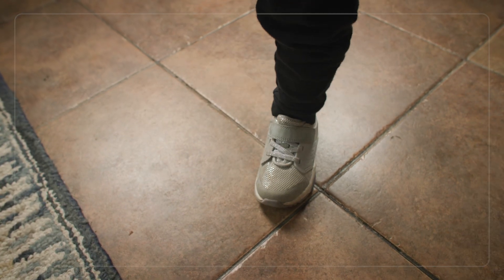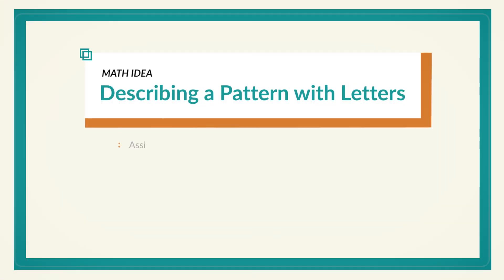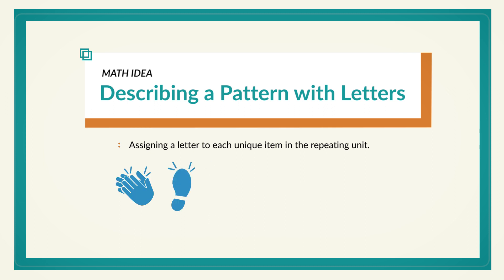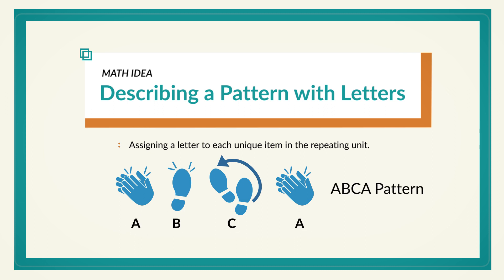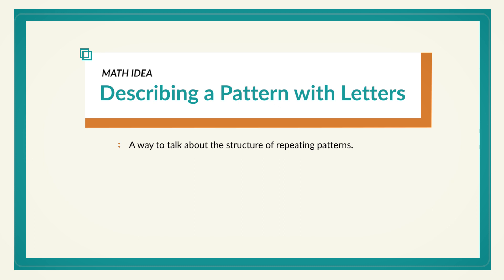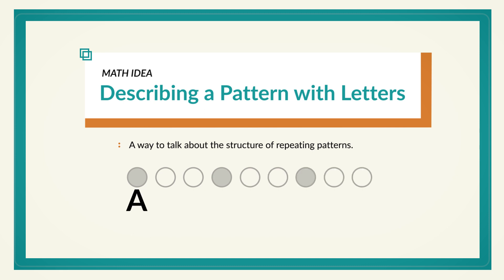When transferring a pattern from one set of movements to another, it can be helpful to describe the pattern using letters. A pattern can be represented with letters by assigning a letter to each unique item in the pattern's repeating unit. So if my pattern's repeating unit is clap, stomp, stomp, I could call it an ABB pattern, where the clap is represented by A and the stomp is represented by B. Or if my pattern's repeating unit is clap, stomp, spin, clap, I would call it an ABCA pattern. Using letters to represent a pattern like this is a way to talk about the structure of repeating patterns — instead of describing the pattern as something, then something else, then the second thing again, you can use letters and call it an ABB pattern.